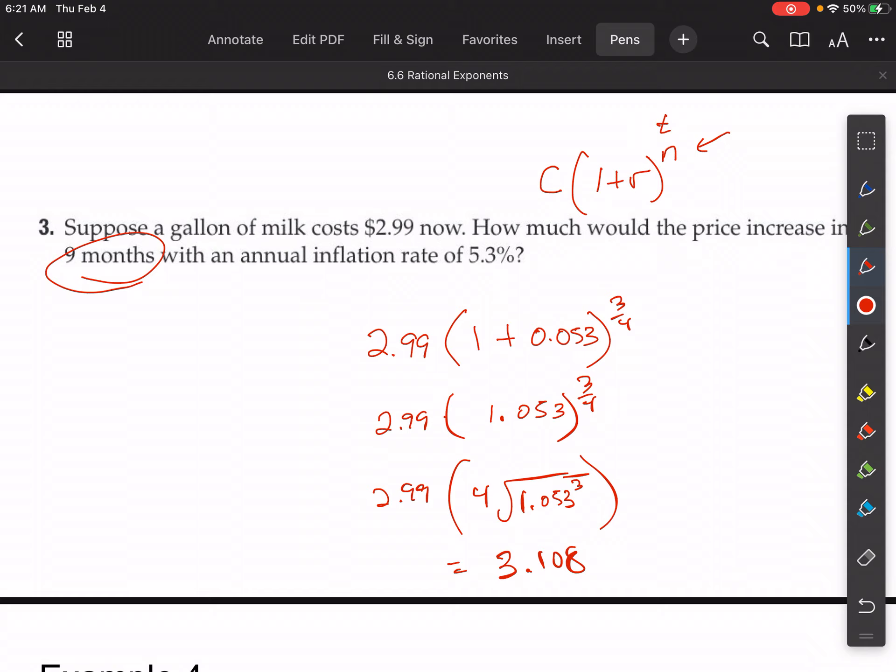Excuse me. And then I need to subtract that out to figure out how much the price increased, right? So I have 2.99, 3.108. So when I do this, I get approximately, and it's close to 12 cents.